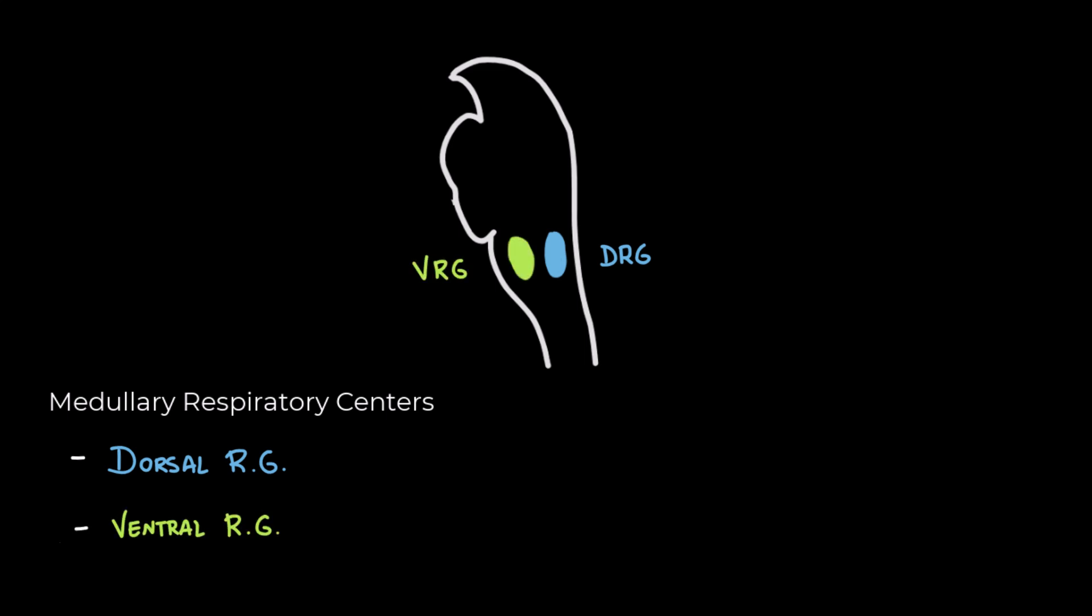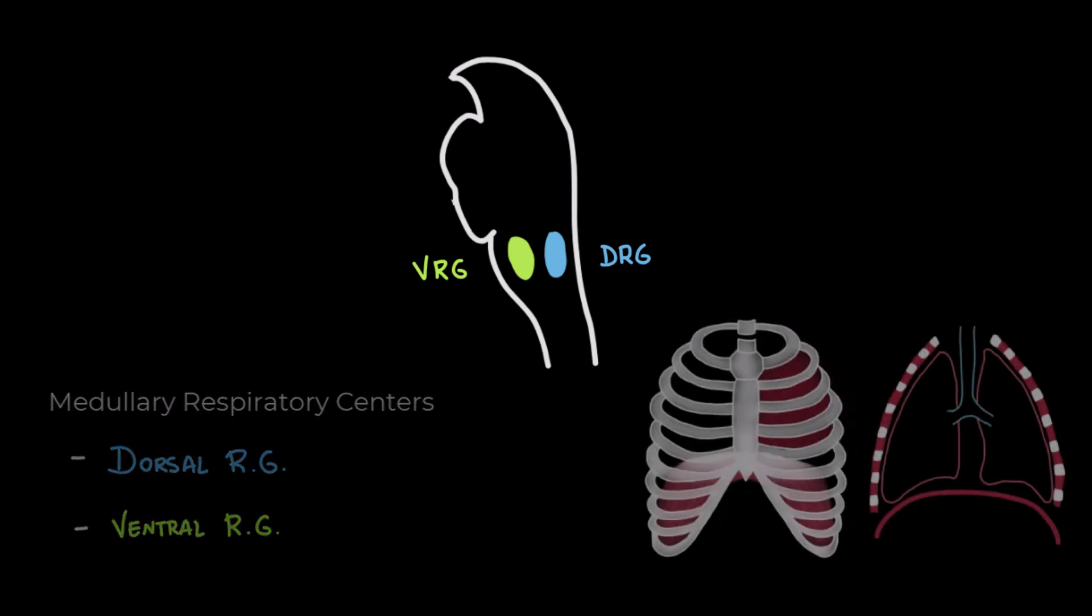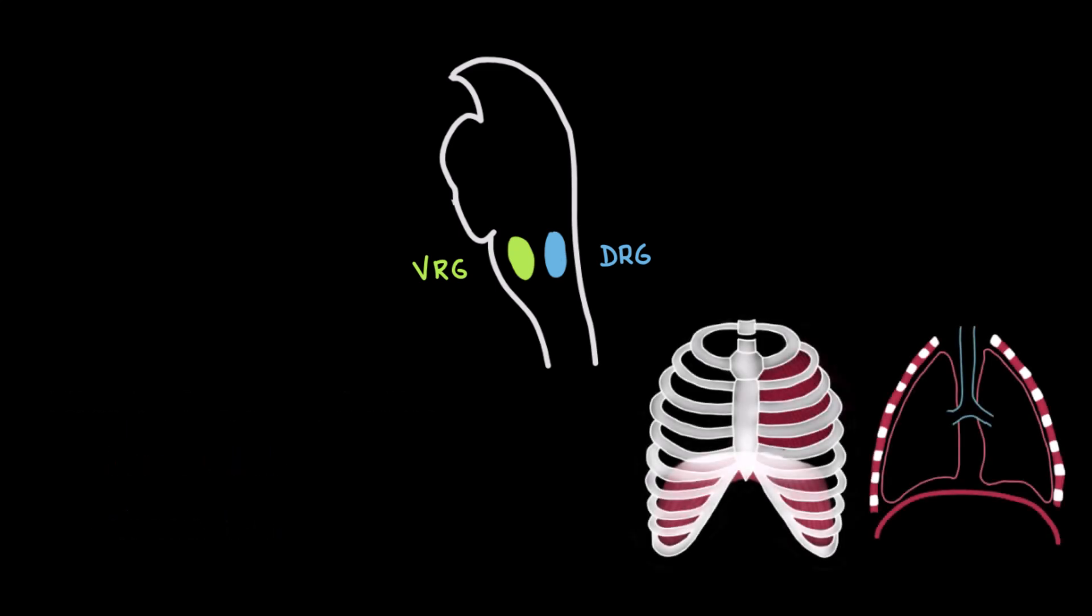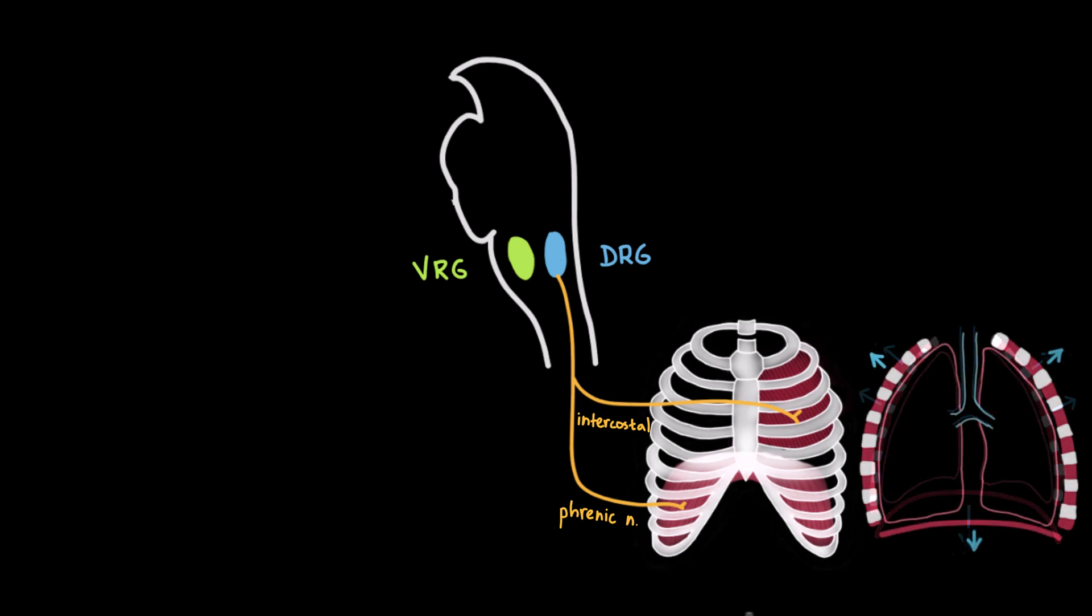The dorsal respiratory group is primarily responsible for inspiration. It sends signals through neurons to the inspiratory muscles. Specifically, it sends signals through the phrenic nerve to the diaphragm and through the intercostal nerves to the external intercostal muscles. When these muscles contract, the diaphragm moves downward and the ribcage lifts,